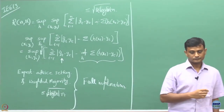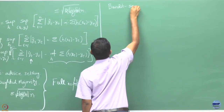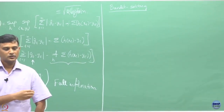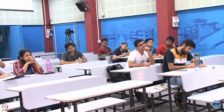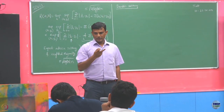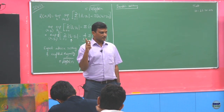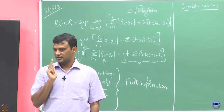I want to move to something called the bandit setting. What I mean by the bandit setting is: when you play an action, you only get to see the loss you incurred from playing that action and nothing else. In the full information case, whatever action you played, you incurred that loss but you also got to observe the losses of everybody else. In the bandit setting, that is not the case — whatever you play, you incur and observe only the loss for that action.